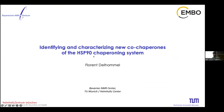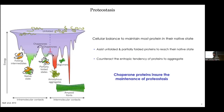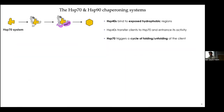Good morning everyone, thanks for the introduction and the opportunity to present my work. Today I will talk about HSP90 and about identifying and characterizing new co-chaperones for HSP90. One of the main functions of the cell is to maintain most proteins in their active state, and there are many systems dedicated to that, including the ubiquitin system that degrades inactivated proteins, and chaperones that help proteins reach their stable active state. Today I will focus mainly on HSP70 and HSP90.